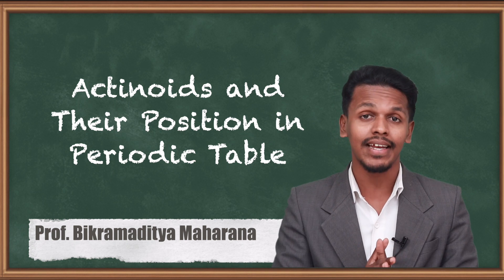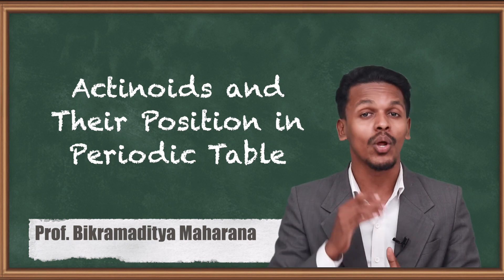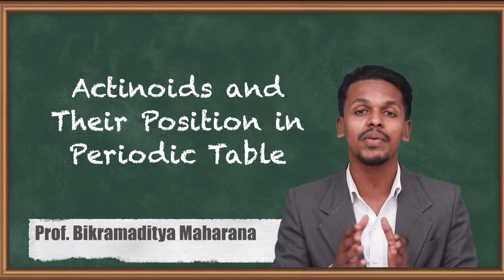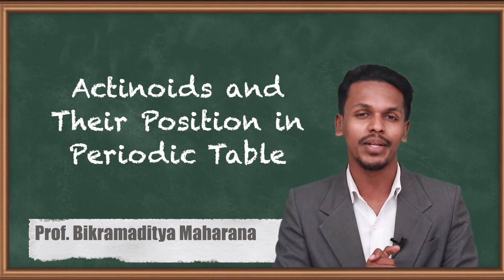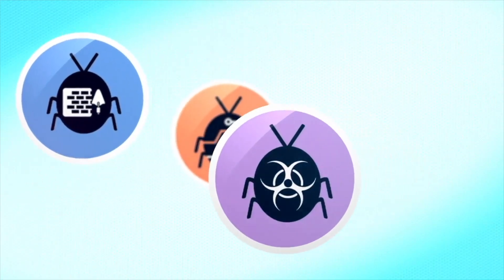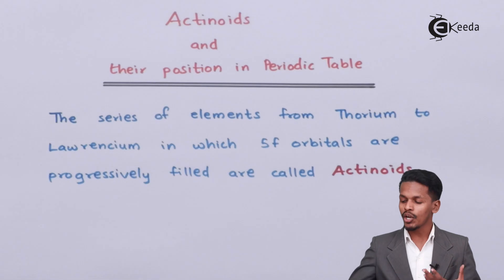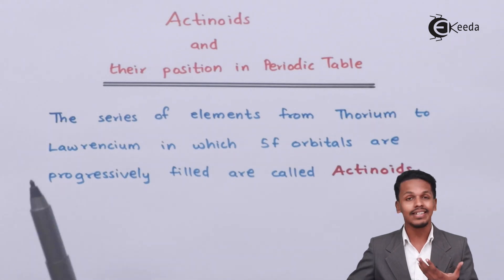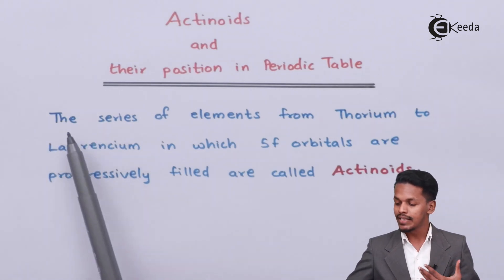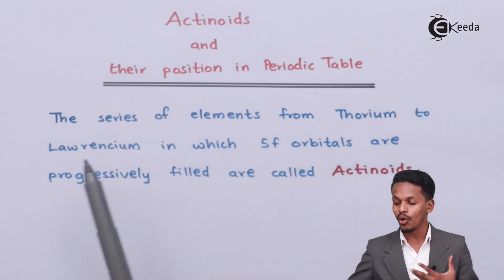Let us understand what actinoids are and their position in the periodic table. Actinoids are part of the f-block elements. The series of elements from thorium to laurencium in which 5f orbitals are progressively filled are called actinoids.